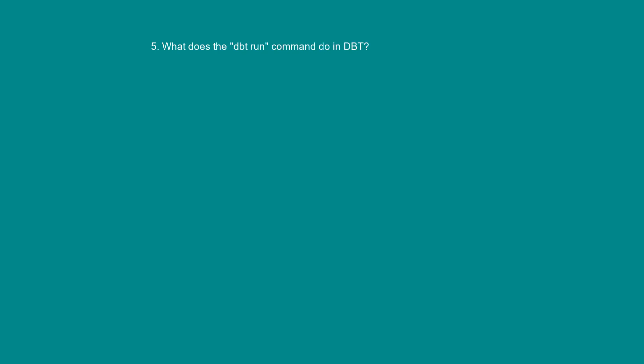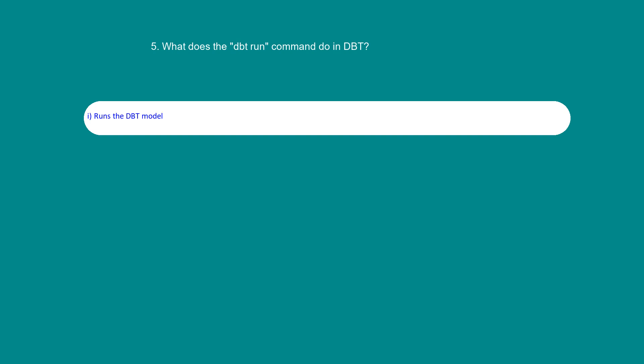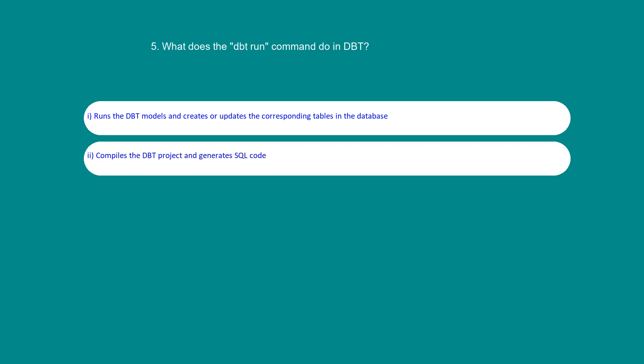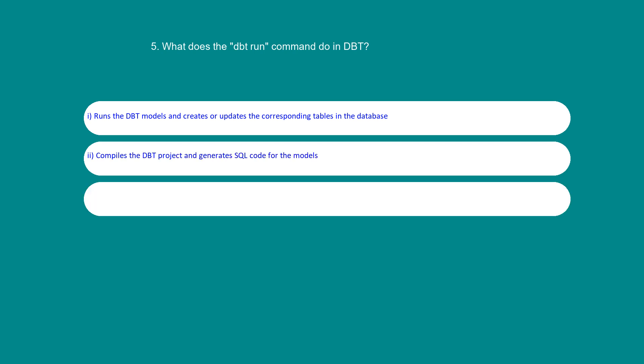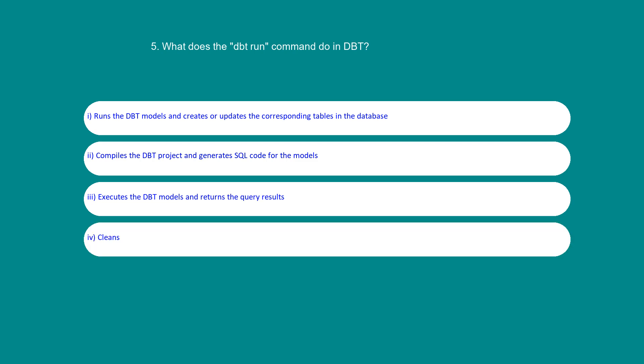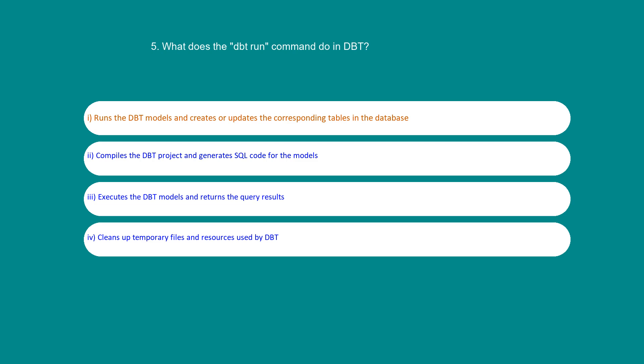What does the dbt run command do in dbt? Option 1: Runs the dbt models and creates or updates the corresponding tables in the database. Option 2: Compiles the dbt project and generates SQL code for the models. Option 3: Executes the dbt models and returns the query results. Option 4: Cleans up temporary files and resources used by dbt. The answer is 1: Runs the dbt models and creates or updates the corresponding tables in the database.